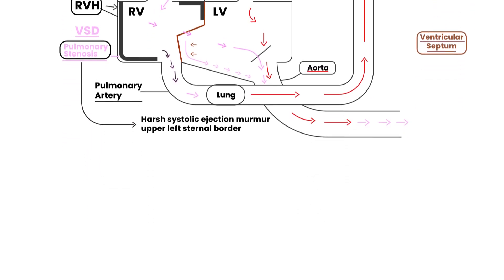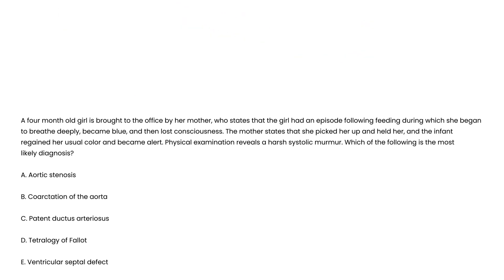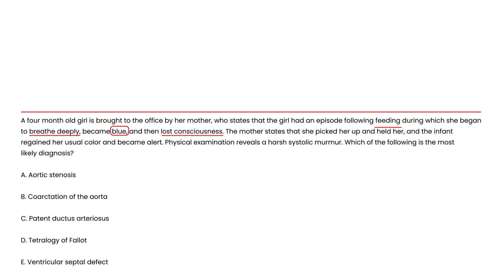Now for clinical vignettes. A four-month-old girl is brought to the office by her mother, who states the girl had an episode following feeding during which she began to breathe deeply, became blue, and then lost consciousness. The mother picked her up and held her, and the infant regained her usual color and became alert. Physical exam reveals a harsh systolic murmur. What is the most likely diagnosis? The child being fed and turning blue — that's the tet spell — Tetralogy of Fallot.